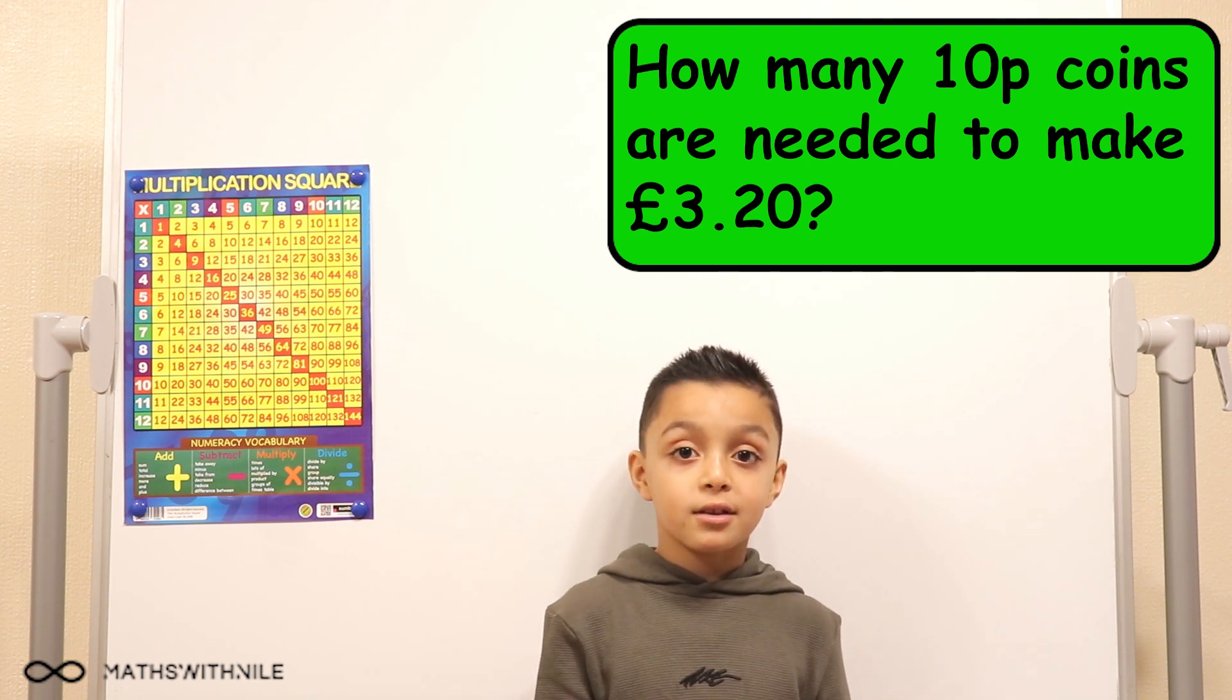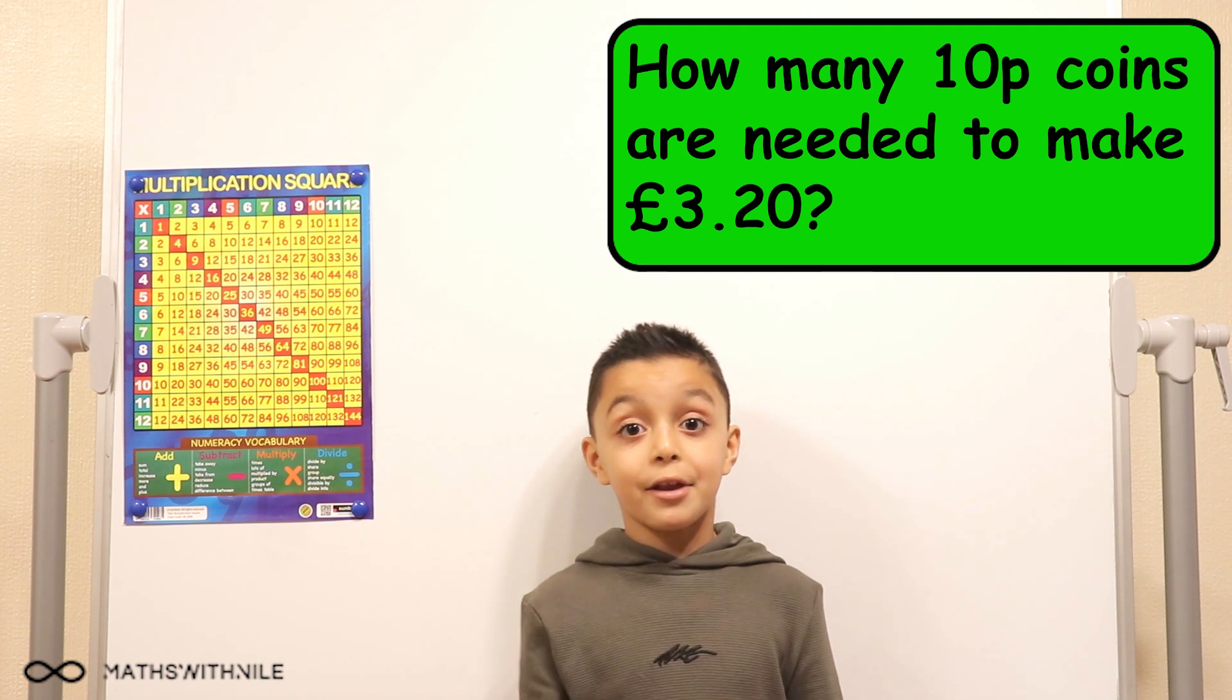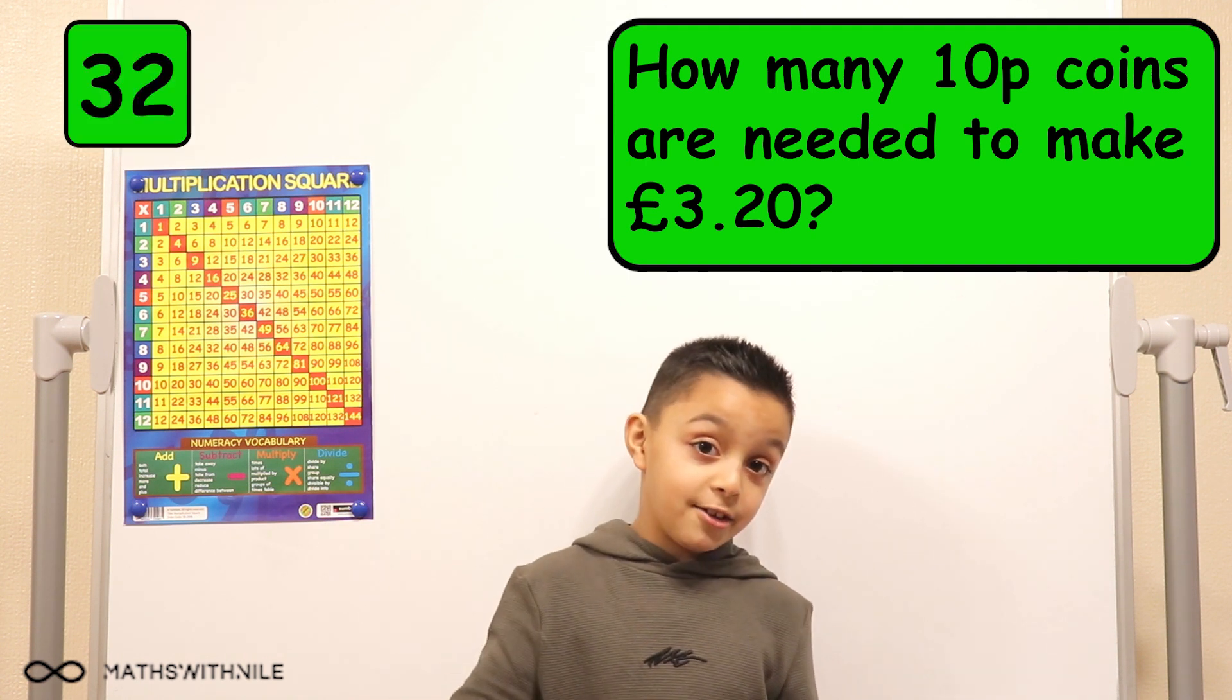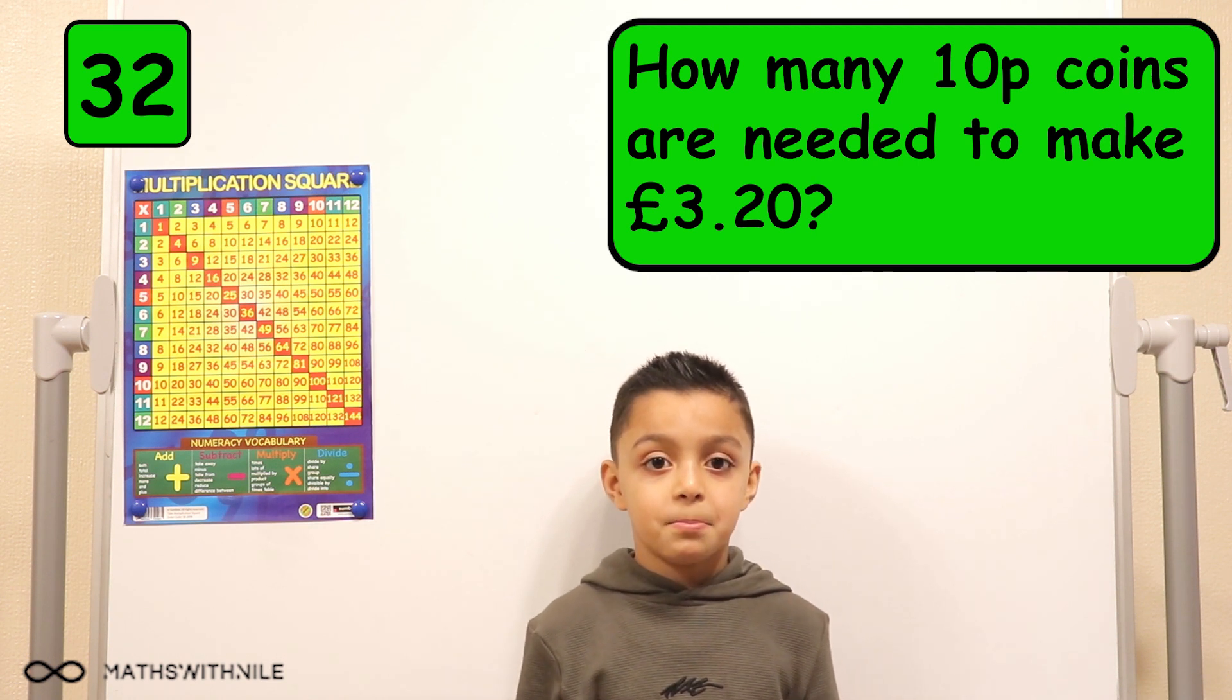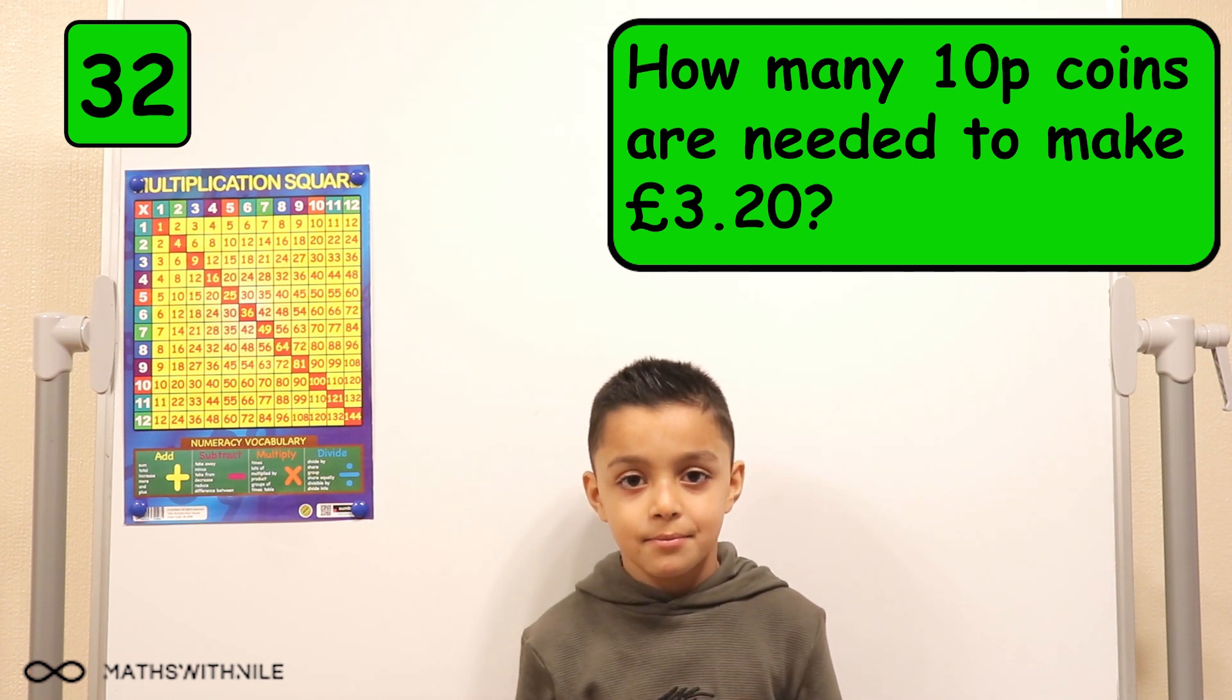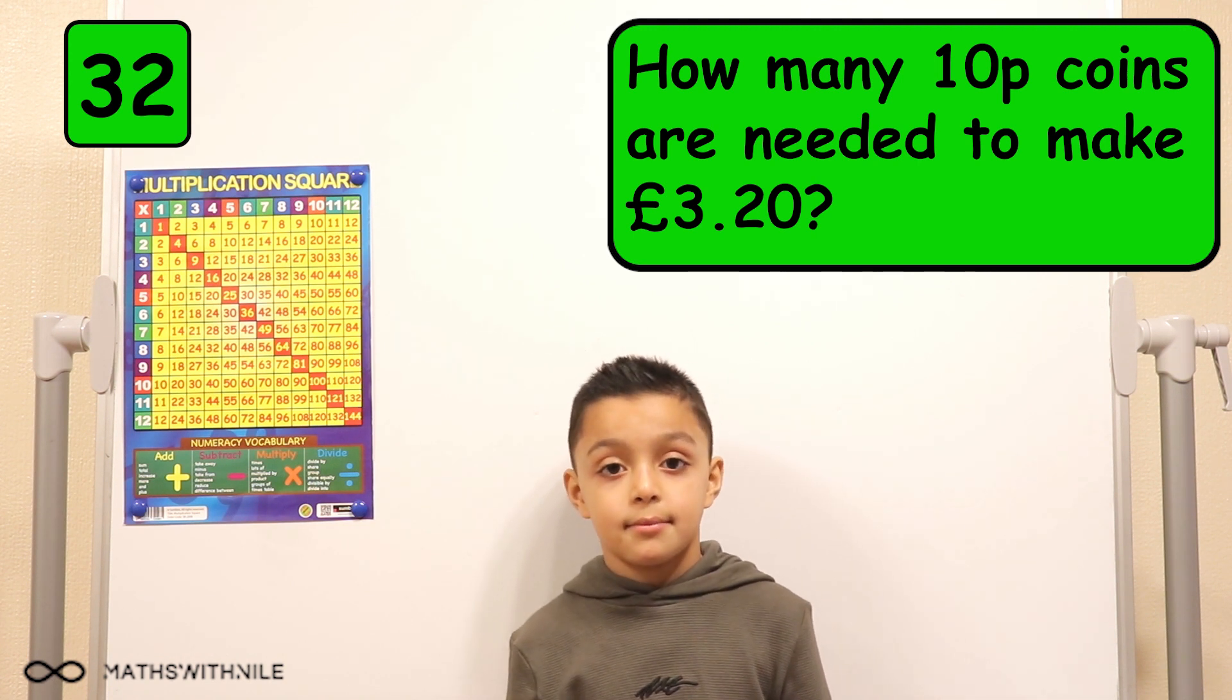And then 10 goes into 20 two times. Mm-hmm. So that means 32. 32. So you would need 32 10p coins. Yeah. To make £3.20. Yeah. Okay. Good, I agree.